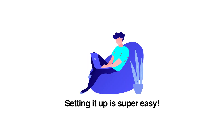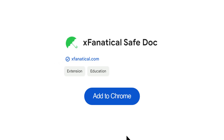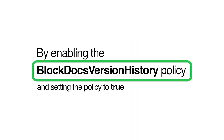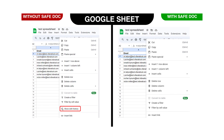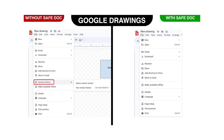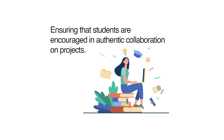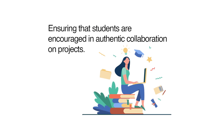Setting it up is super easy. Go to the Chrome Web Store page, search for SafeDoc, then click Add to Chrome to add this extension. Once SafeDoc is installed, by enabling the Block Docs version history policy and setting the policy to true, you can disable access to version history, ensuring that students are encouraged in authentic collaboration on projects.